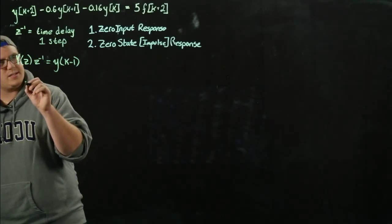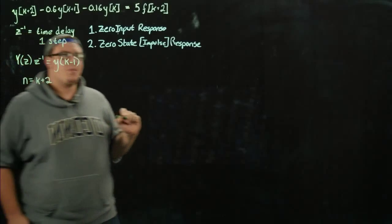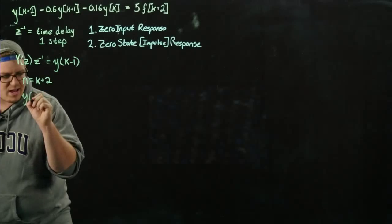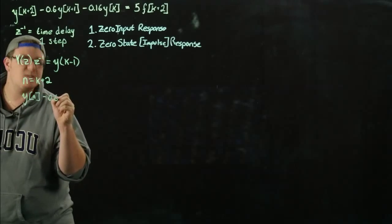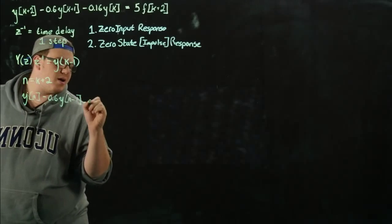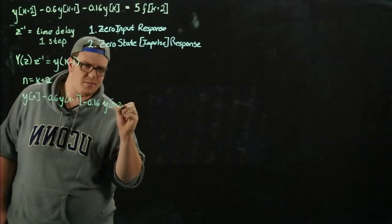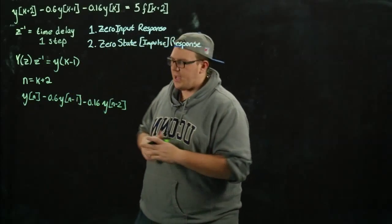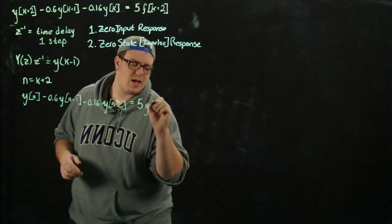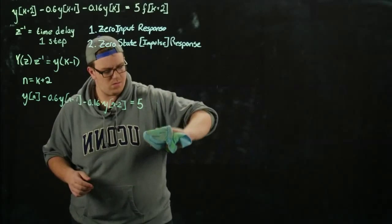What we do now is make a quick substitution of n equals 2k plus 2 in our difference equation, because that will allow us to use these z-inverse operators and see how to make the substitution very easily. Rewriting this, we get y of n minus 0.6 y of n minus 1 minus 0.16 y of n minus 2, and on the other side we end up with 5 f of n.